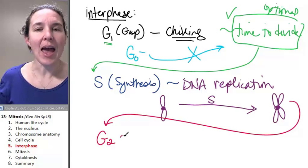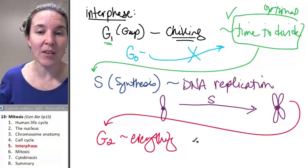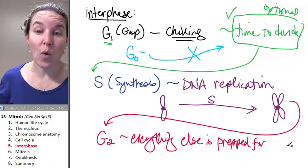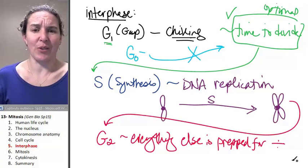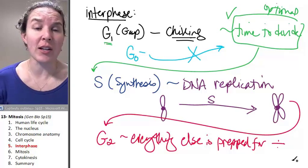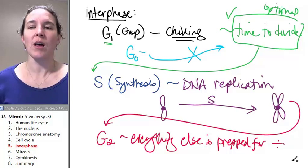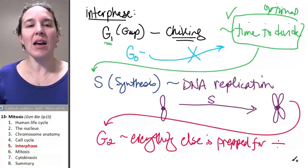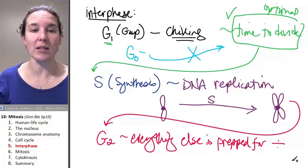And this is where everything else is prepped for division. Simply meaning, dude, we're going to need mitochondria for each cell. We're going to need some ribosomes for each cell. We're going to need a new nucleolus in each cell. Endoplasmic reticulum. Got to have some of that. Everything else gets prepared so that the division of the whole process can happen.